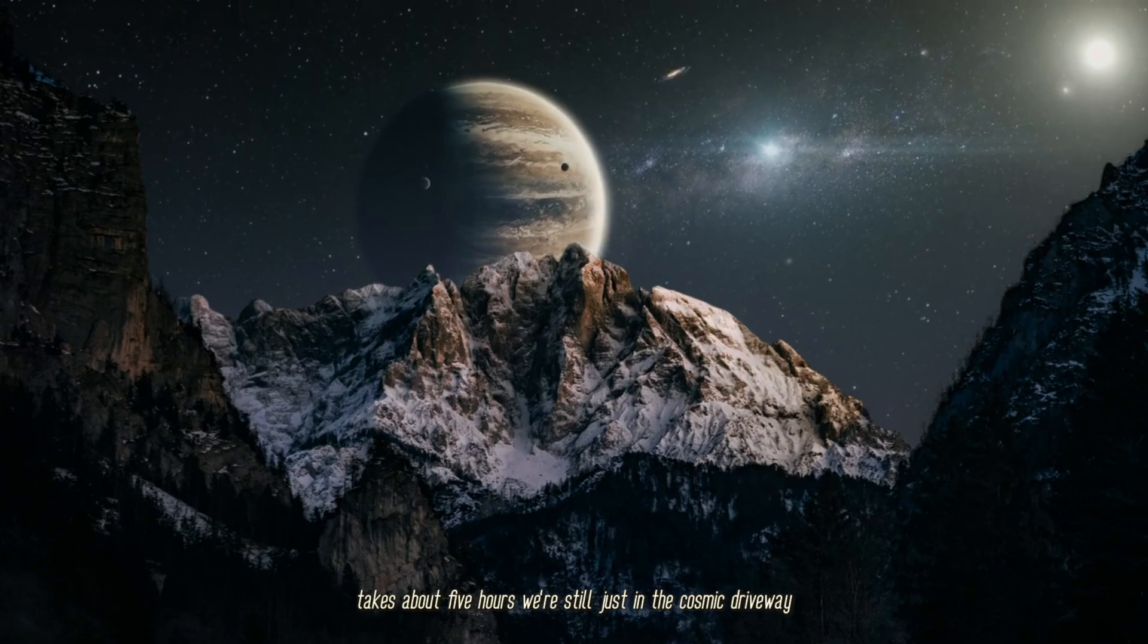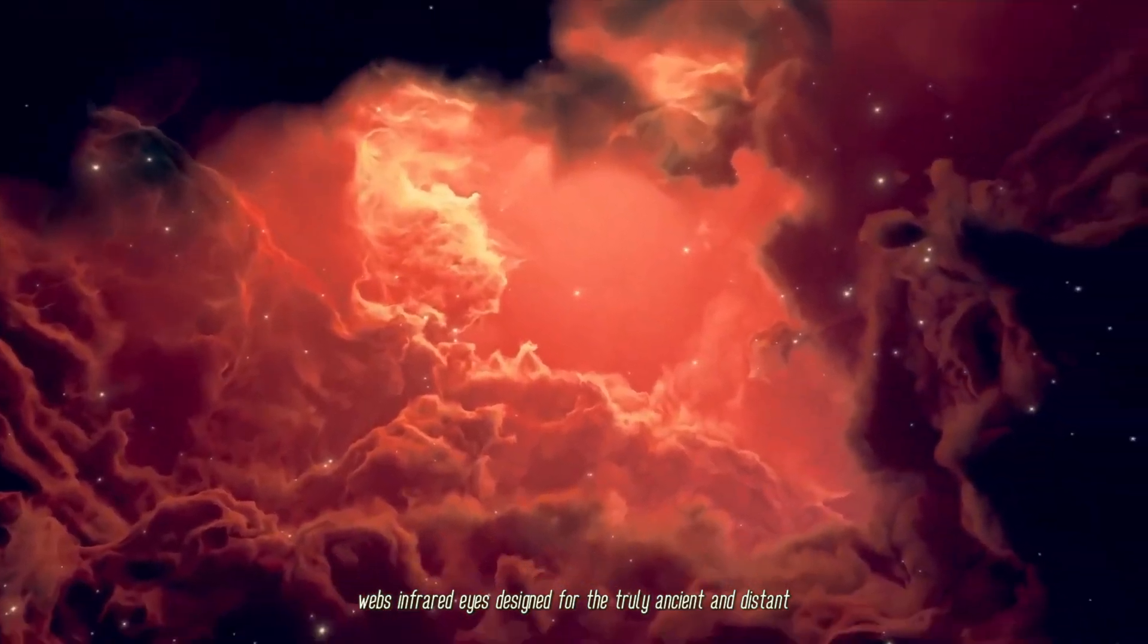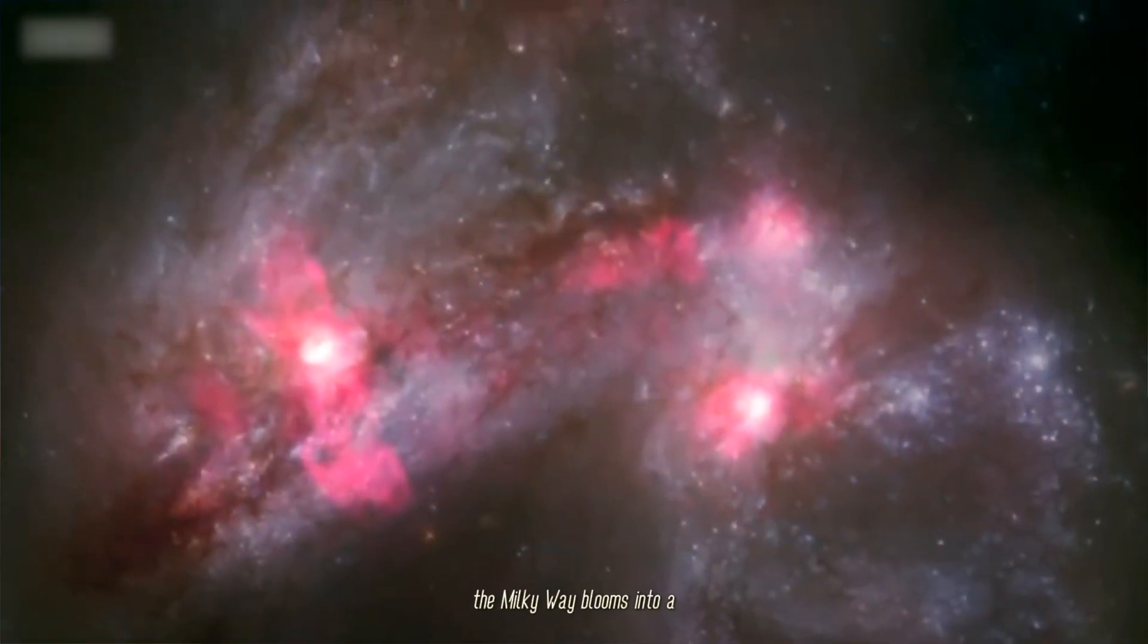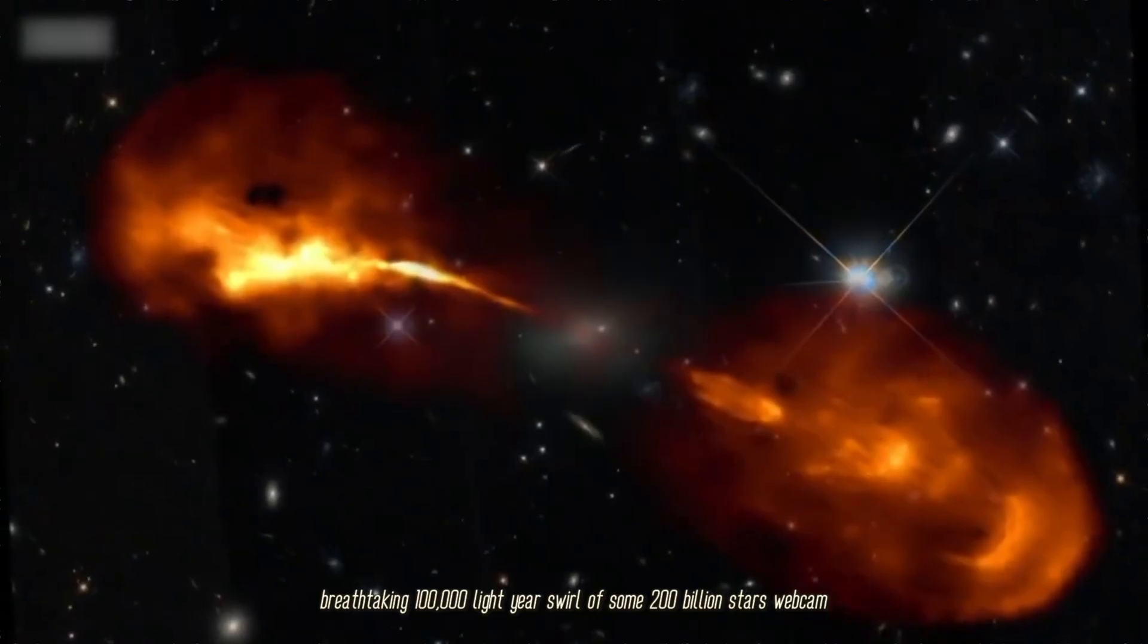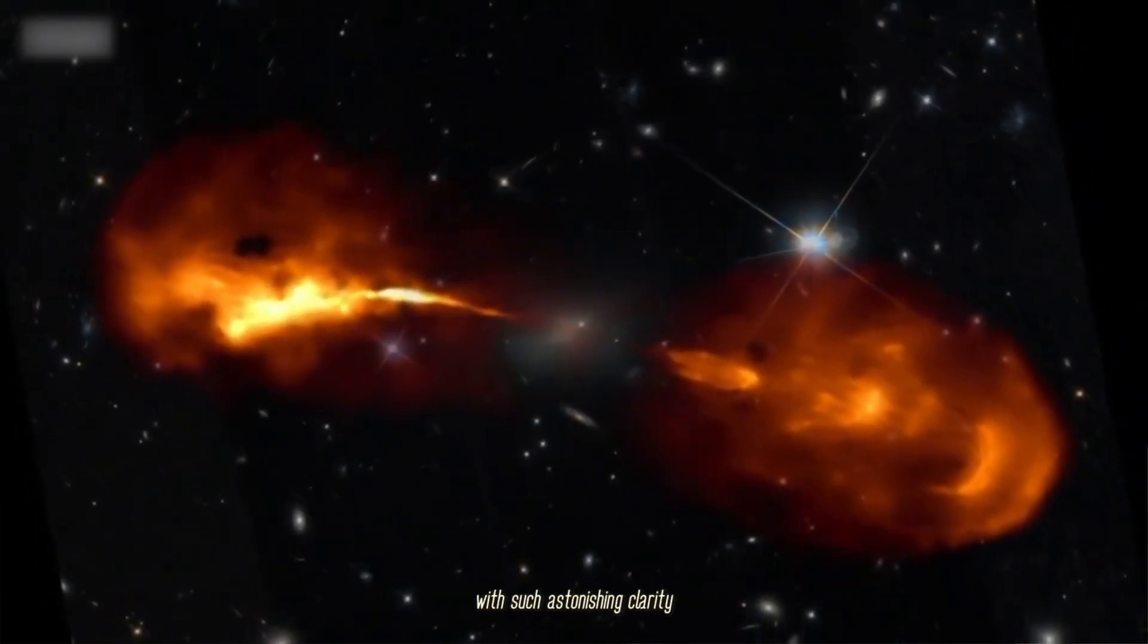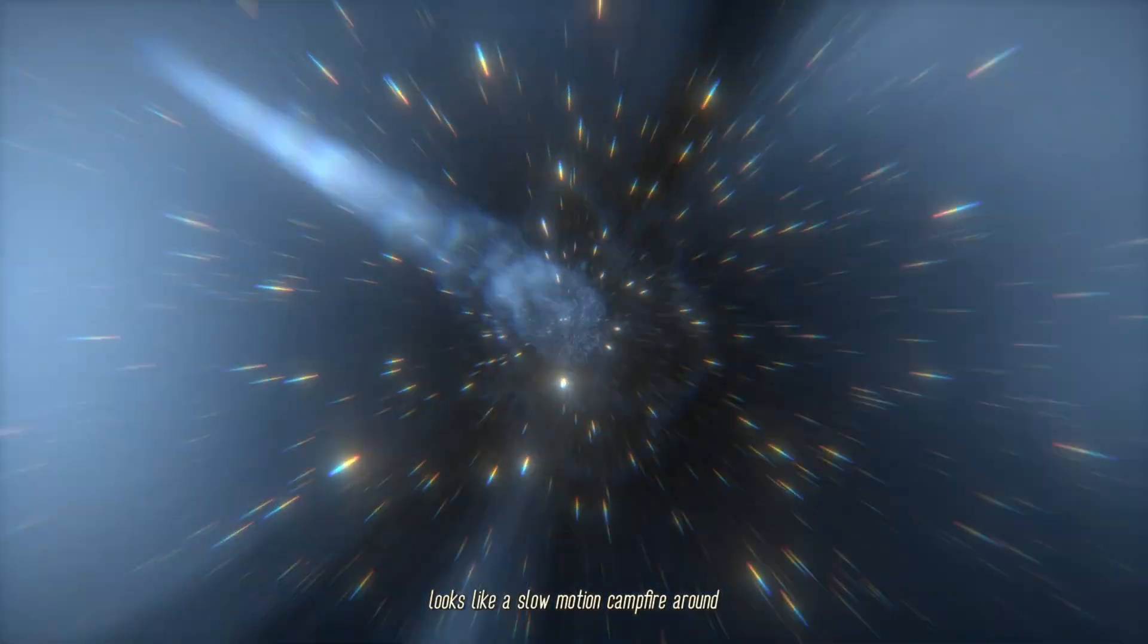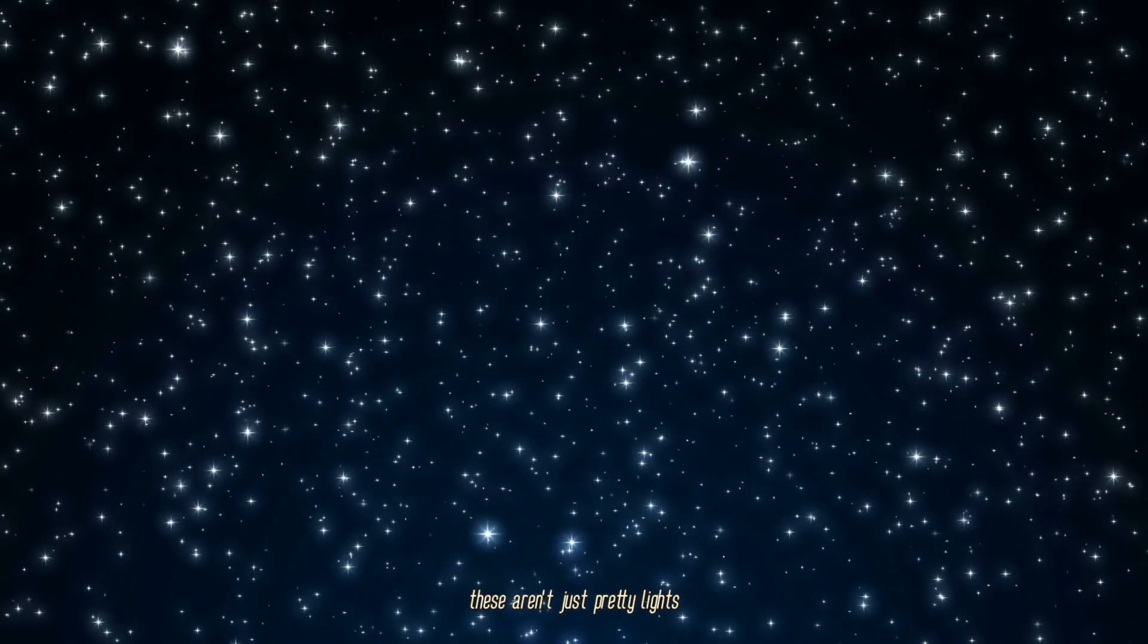Webb's infrared eyes don't even bother with this neighborhood. Zoom outward: our home galaxy, the Milky Way, blooms into a breathtaking 100,000 light-year swirl of some 200 billion stars. Webb can't map every single one, of course, but it has resolved the galactic core with such astonishing clarity that the supermassive black hole's accretion flow looks like a slow-motion campfire.